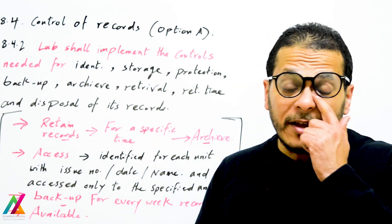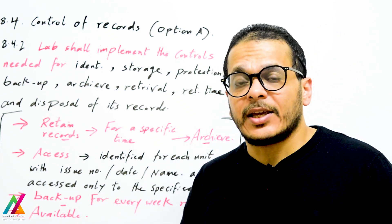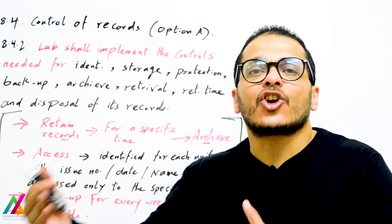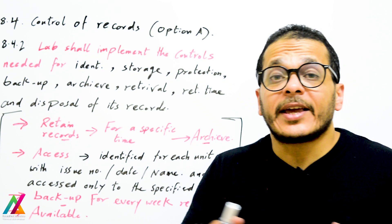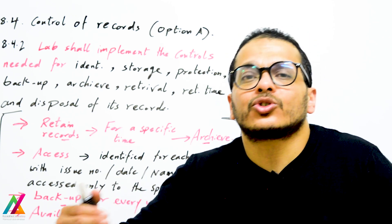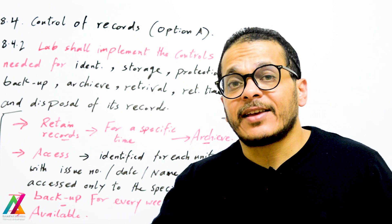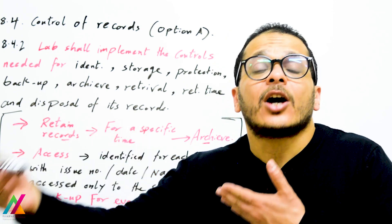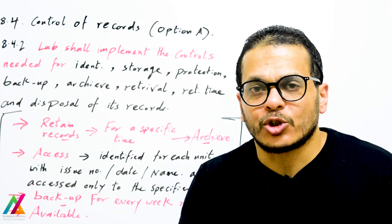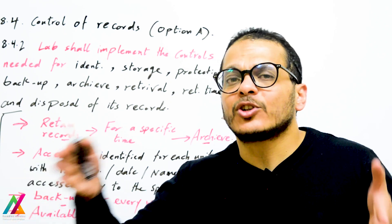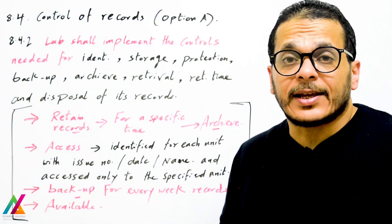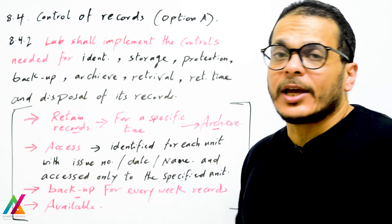Retaining records is very important — you shall keep records inside the unit for a specific time, after which you make archiving. This depends on lab capacity: if the lab analyzes many samples daily, they may archive every six months; if the workload is lighter, they may retain records for one year before archiving. Whatever retention period is written in the procedure, the lab must follow it.